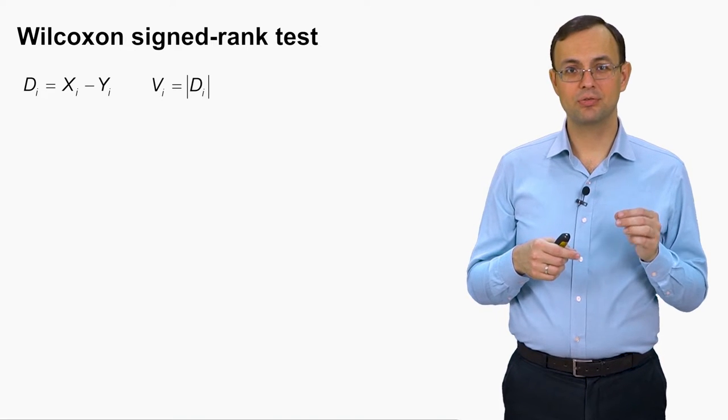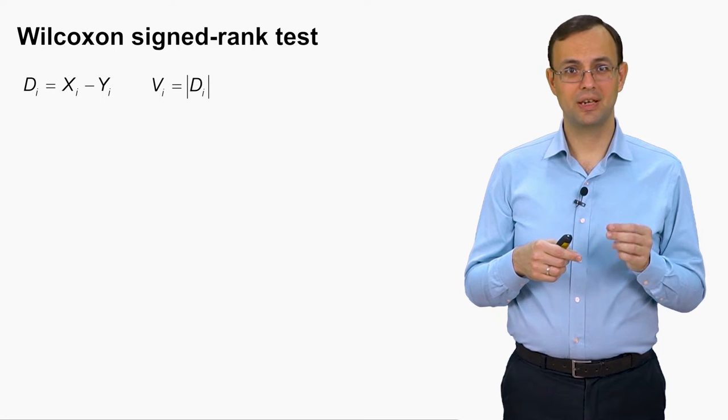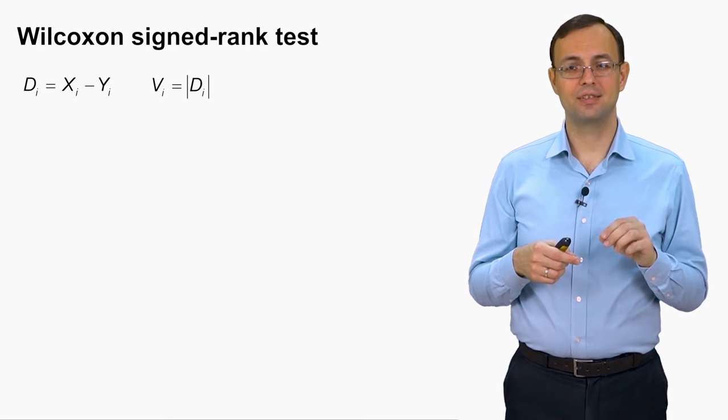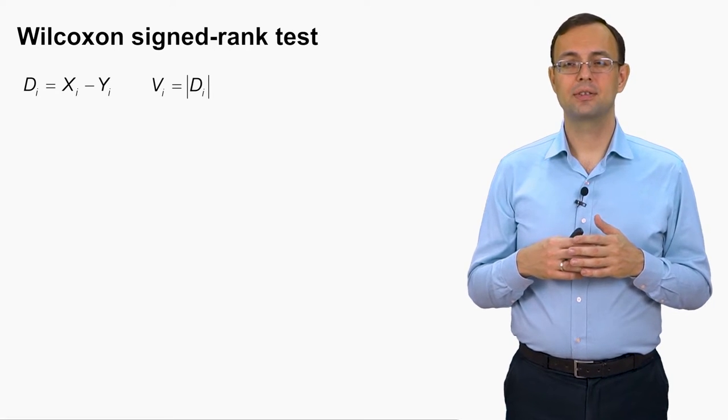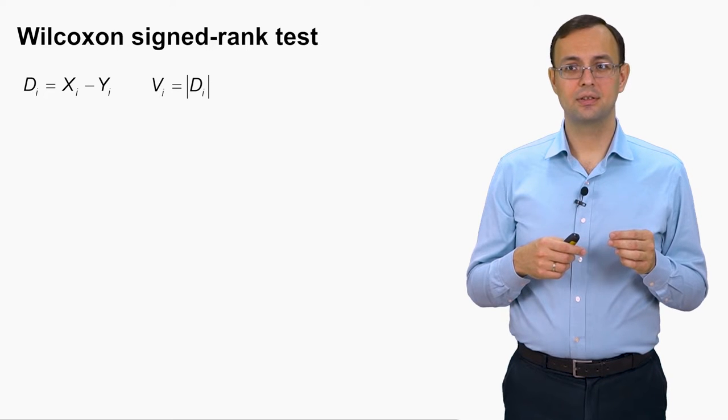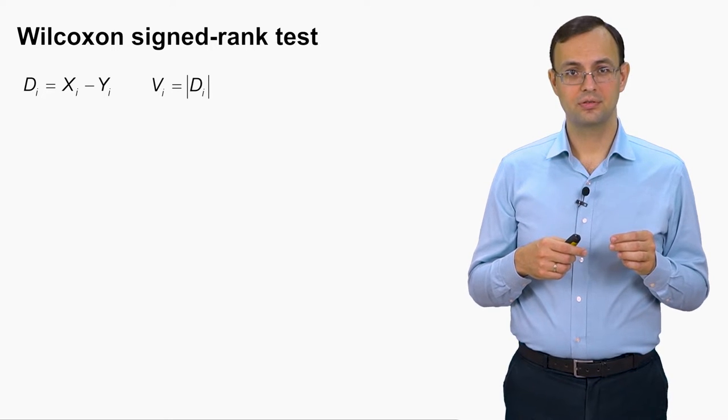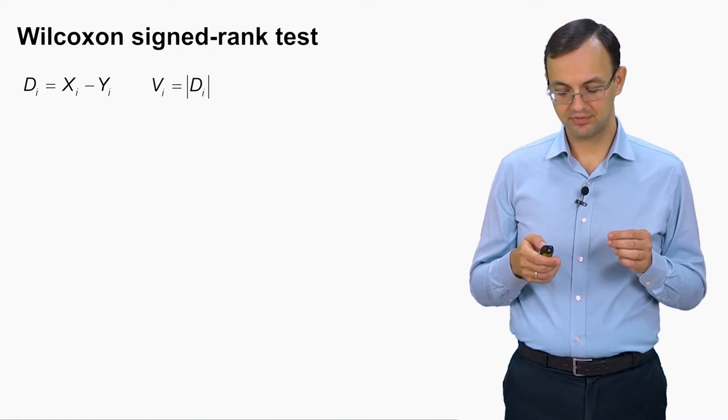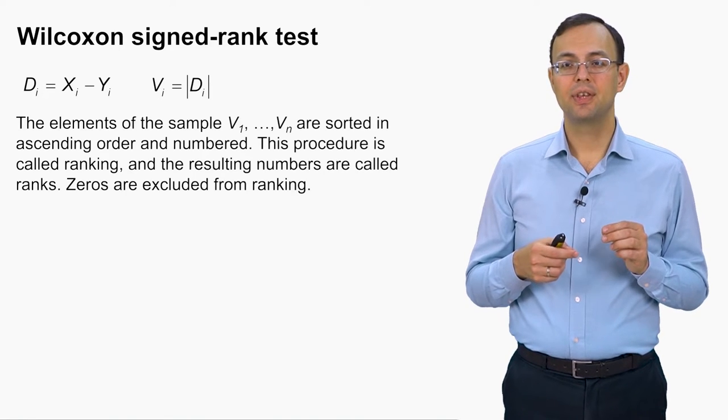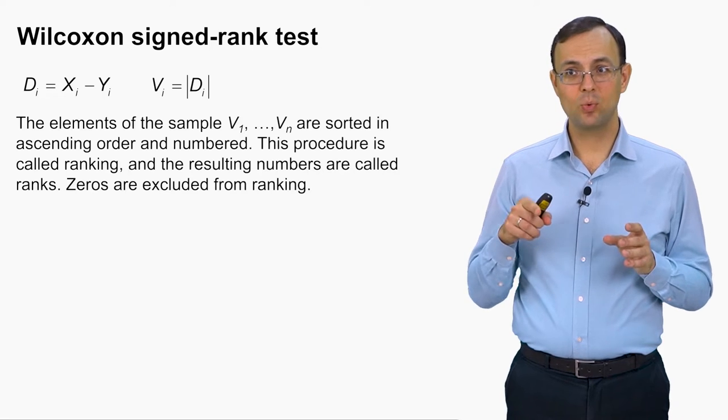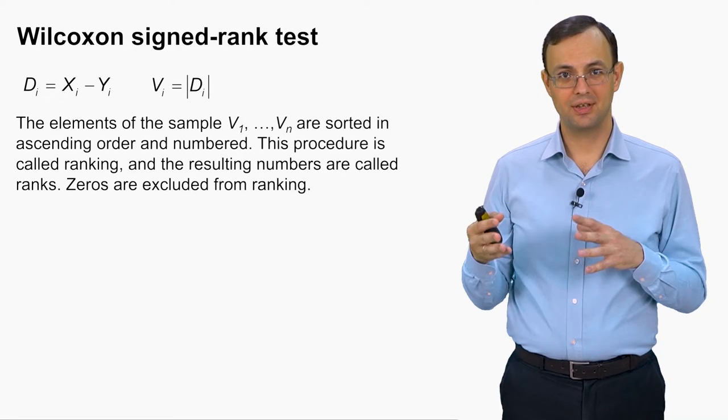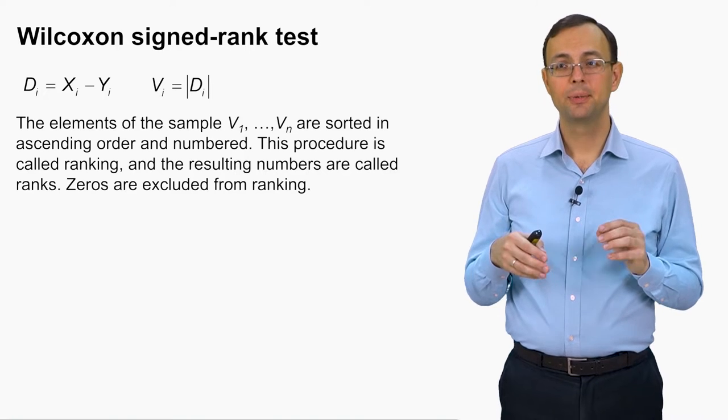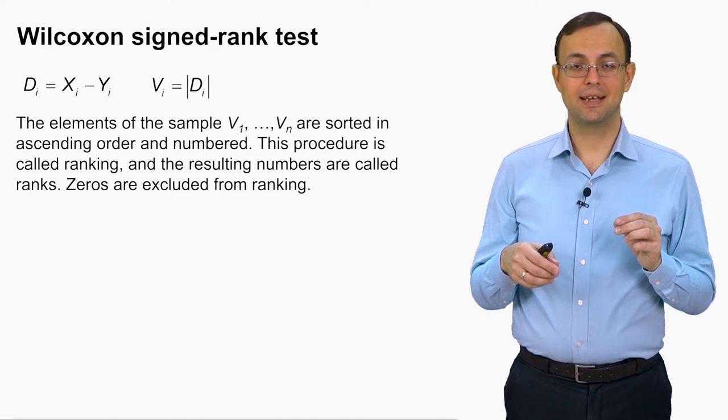Here we also, the first step is also to calculate the differences between Xs and Ys. So di is still the difference. And then we calculate modulus, absolute values of these differences. And then this sample v1 to vn, where vi is the absolute value of di, this sample is ranked.